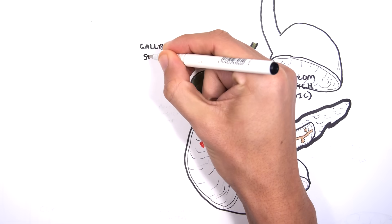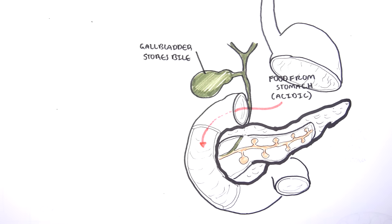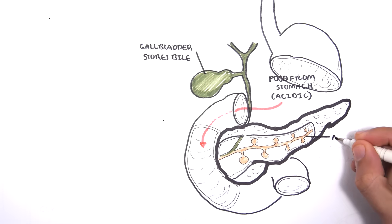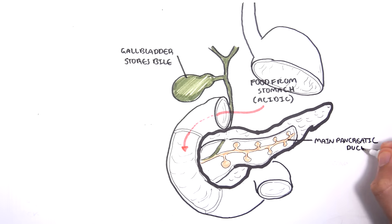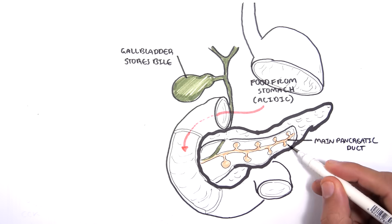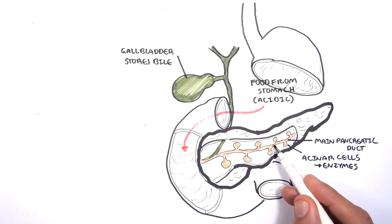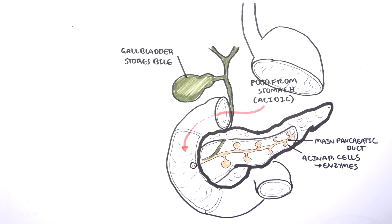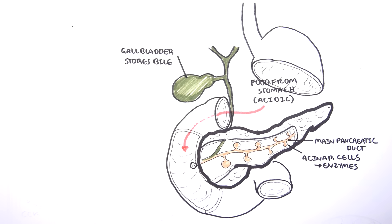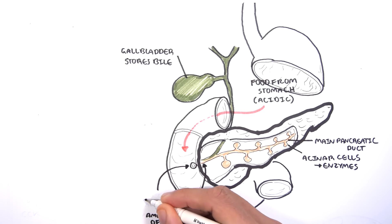When food is in the small intestine, the gallbladder is stimulated to secrete its stored bile into the duodenum. The pancreas is also stimulated to secrete digestive juices into the main pancreatic duct and then into the duodenum. These juices are produced from the acinar cells, which produce enzymes to help in the digestion of food.